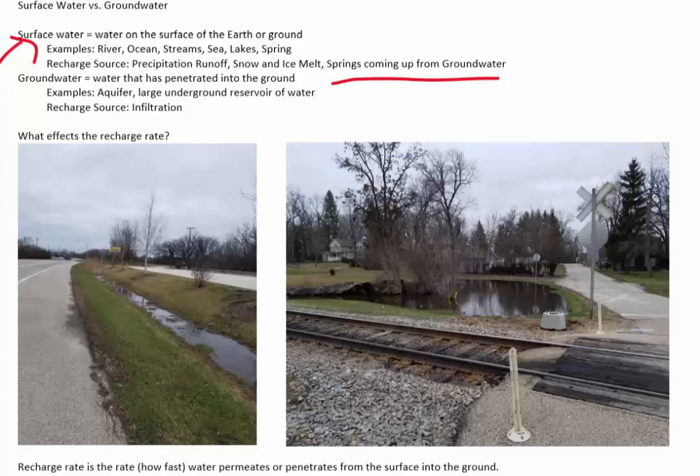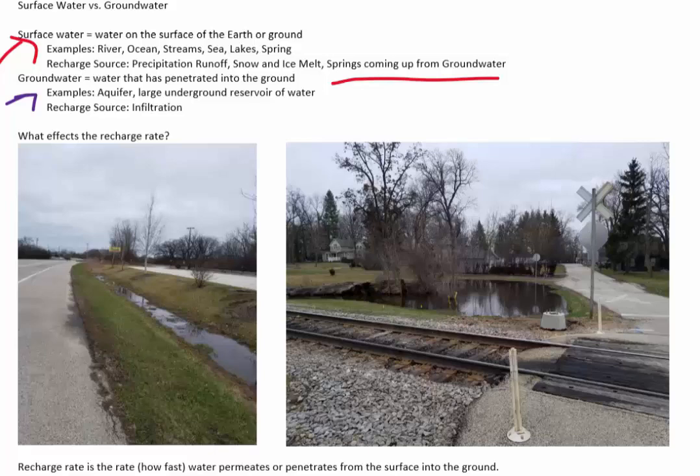And then the other type of water we're talking about is groundwater. So again, that's the water that has penetrated into the ground itself. The primary example of groundwater is called an aquifer. An aquifer is basically a giant underground lake, common way of it being described as a large underground reservoir. And the way that that water gets down is by infiltration, which we talked about up in the water cycle.